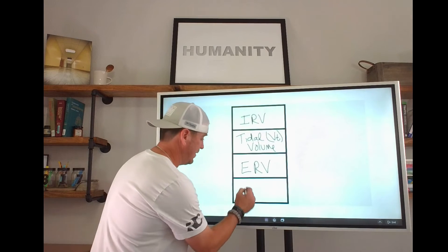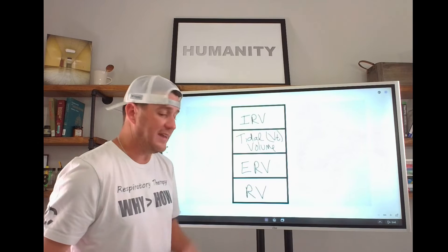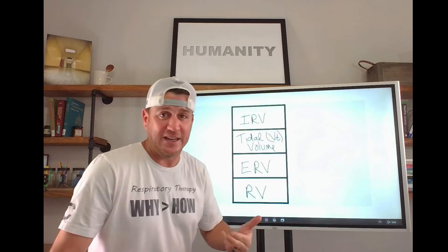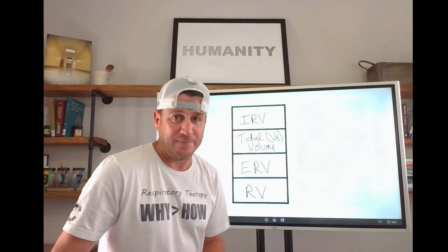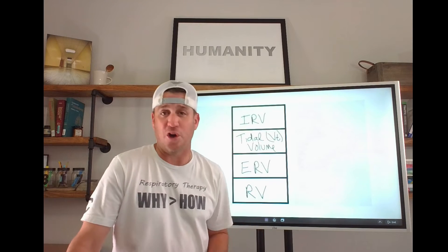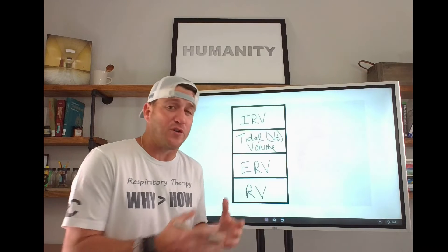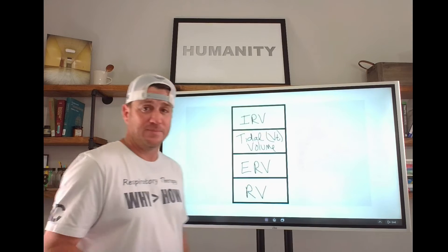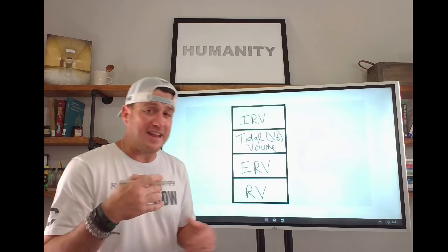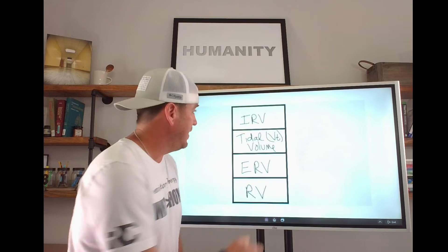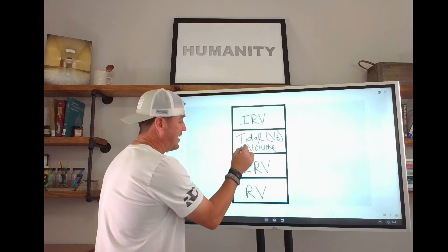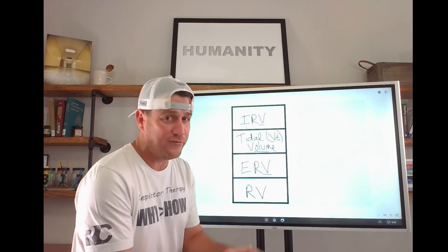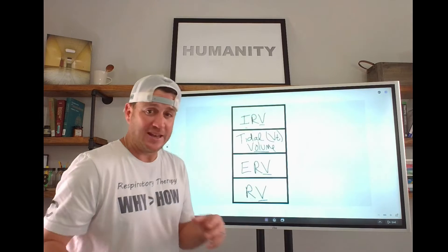Residual volume — RV. Notice it didn't say reserve. We have an inspiratory reserve if we need it, and we have an expiratory reserve if we need it, but we always have a little bit left over. That's the word residual — we can never fully exhale all of the gas out of our lungs. That amount is what we call residual volume.